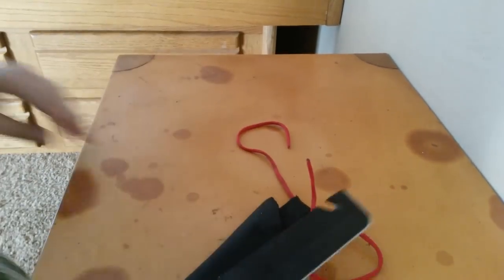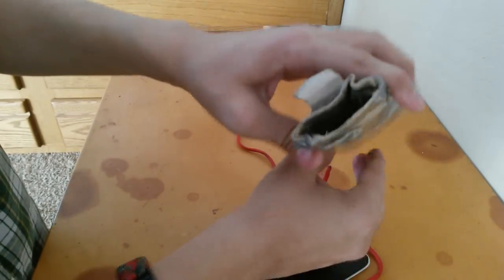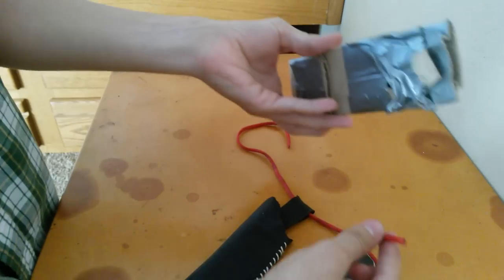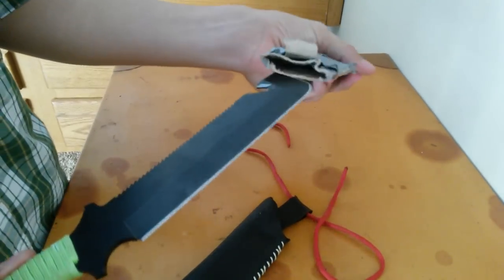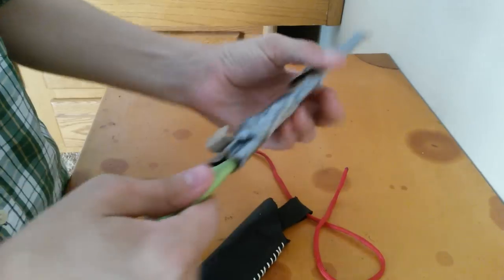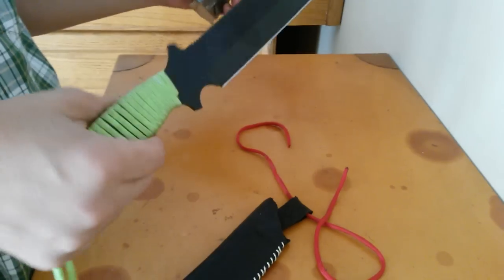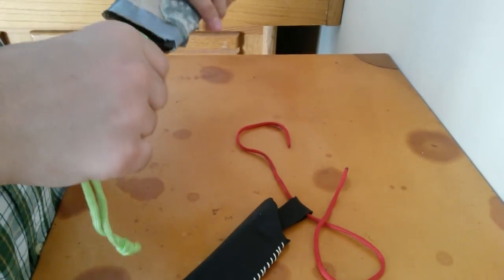So I literally jerry-rigged a little sheath out of a paper towel roll, duct tape, and this paracord. It literally sat like this and held on like that. It wasn't bad, but every once in a while.